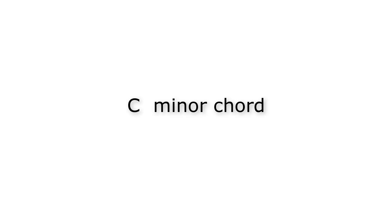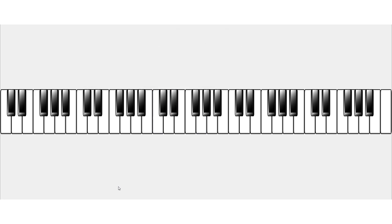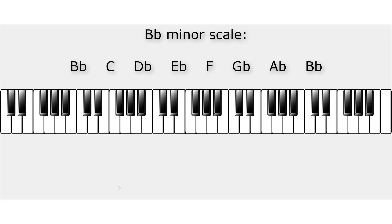Now the C minor chord. The first, third and fifth notes of the C minor scale are C, E-flat and G — that is the C minor triad. Let's finish with one more minor chord: B-flat minor. The B-flat minor scale gives us first, third and fifth notes of B-flat, D-flat and F — and that is the B-flat minor triad.